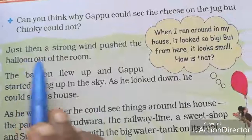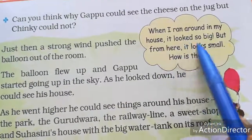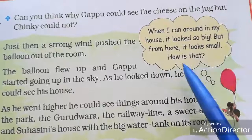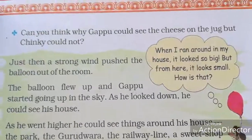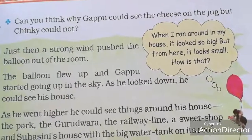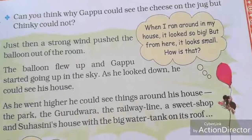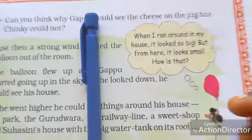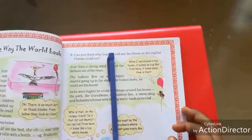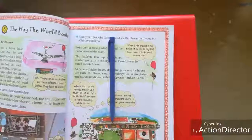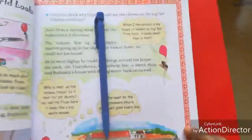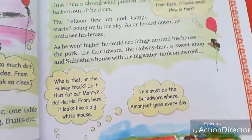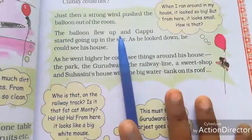Gappu said, 'When I ran around my house, it looked so big. But from here, it looks small. How is that?' See — if you look at a pencil closely, it looks big. But if I show the pencil from the top, it looks small. That's why things look differently in shape and size when we see them from different views and distances.